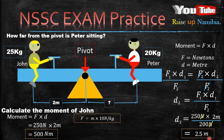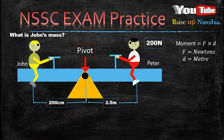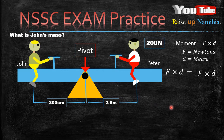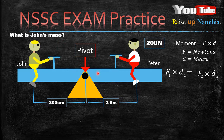Now try this question: what is John's mass? I'll give you 10 seconds — feel free to pause the video. To find John's mass, we use the same formula F1 × D1 = F2 × D2, labeling both sides. John is sitting on the left hand side, so we use the left hand side of the formula.